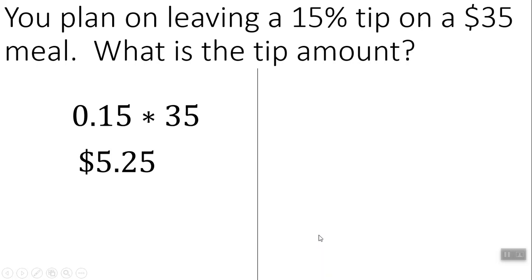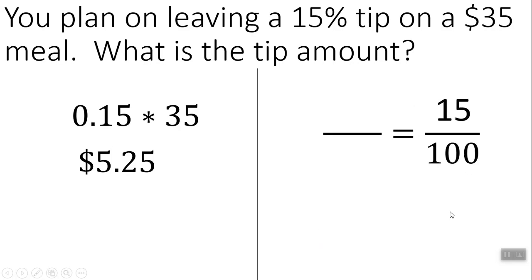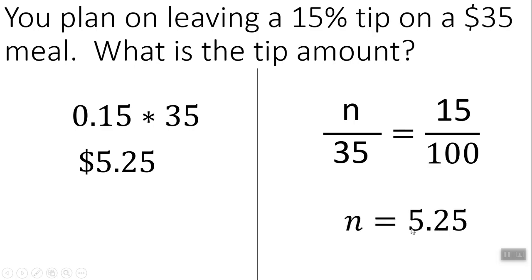And you get an answer of $5.25. We could also do this as a proportion. You could think of 15% as 15 over 100, so for every $100 you're going to be tipping $15. So out of $35, you do 35 times 15 divided by 100, and you'd get $5.25.